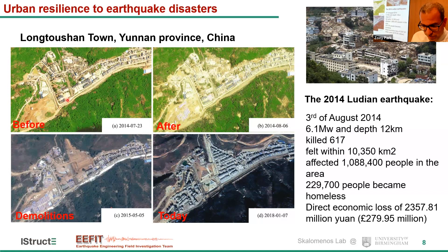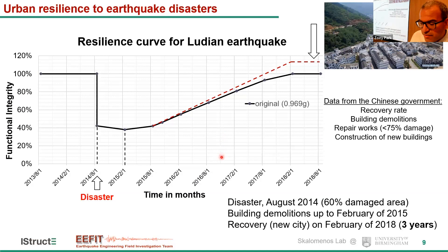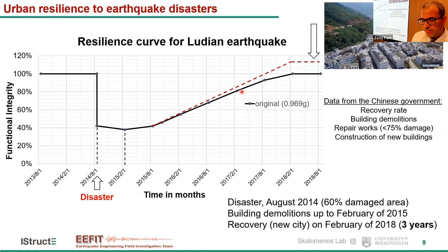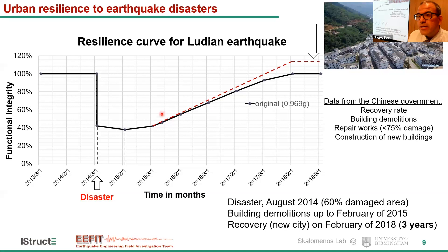Here we can see the resilience curve based on the data I mentioned. The instantaneous drop was more than 60% — the area of buildings damaged — with further decreases through demolitions. Based on the recovery rate provided by our colleagues in China, we also evaluated the period of complete recovery, which took about three years. Our goal is through the simulation platform to develop these resilience curves for real cities before they are hit by an earthquake, so we can establish the required response measures.